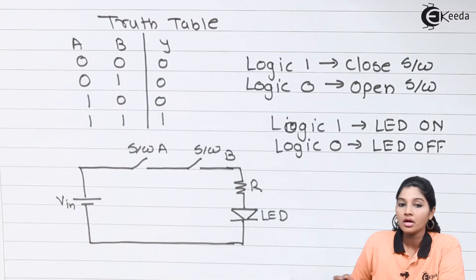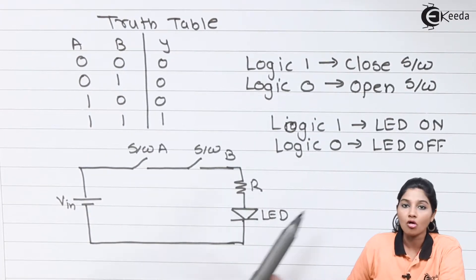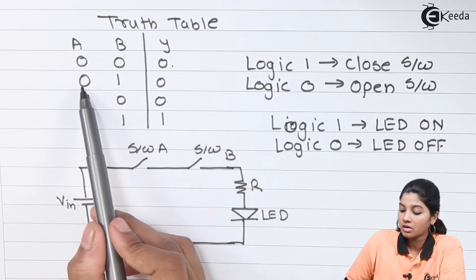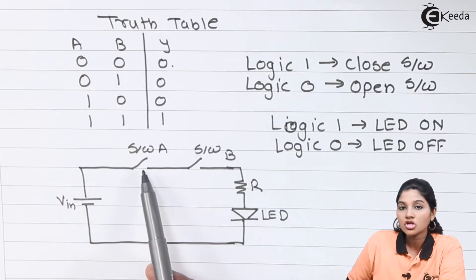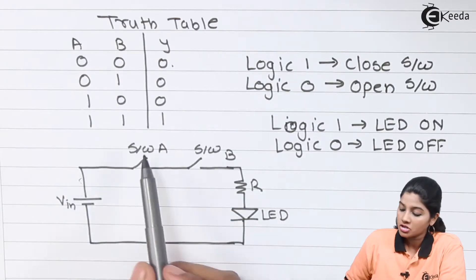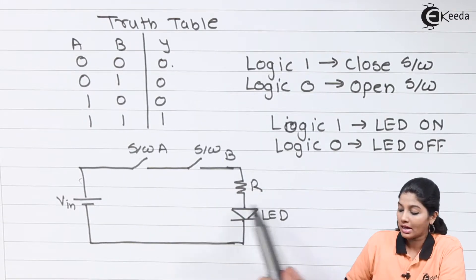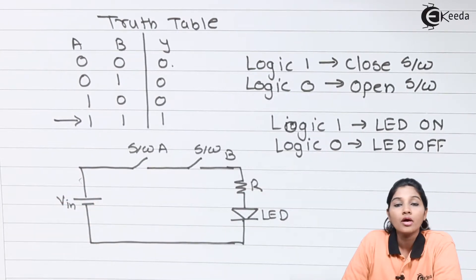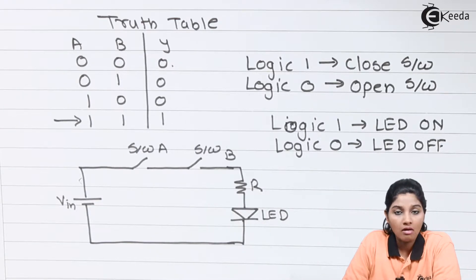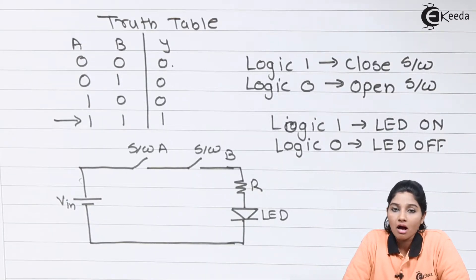In the first combination, both inputs are 0 — both switches A and B are open, no power is supplied to the LED, so output is 0. In the second condition, switch A is OFF and switch B is ON, but as switch A is OFF, no power reaches the LED, so output is 0. In the third condition, switch A is closed but switch B is open, so power still doesn't reach the LED and output remains 0. In the fourth condition, both switches are 1 — both act as closed switches — power is supplied to the LED through current limiting resistor R, and the LED glows, so output is high. In AND gate, if both inputs are high, then only the output goes high; otherwise if any one input is low, the output becomes 0.